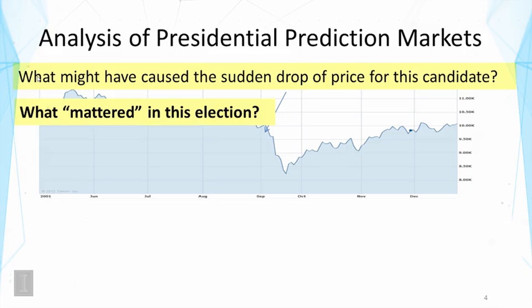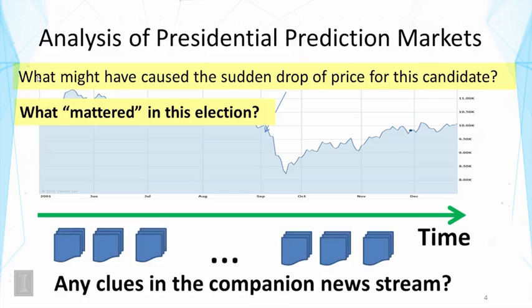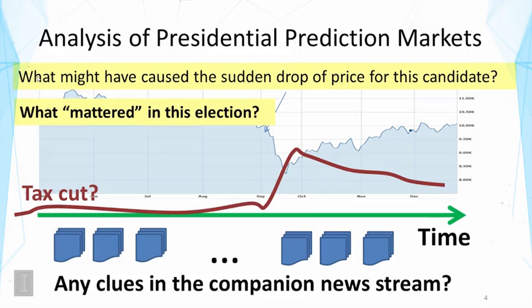Suppose you see a sudden drop of price for one candidate — you might want to know what caused it. Or in social science study, you might be interested in knowing what mattered in the election, what issues really mattered to people. We can look at the companion news stream and ask: are there clues in the news stream? For example, we might discover that mention of tax cut has been increasing since that point, so maybe that's related to the drop in price.